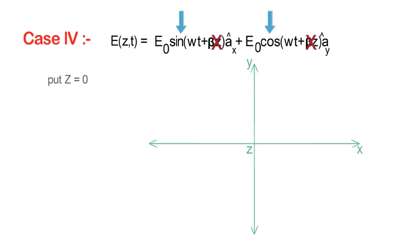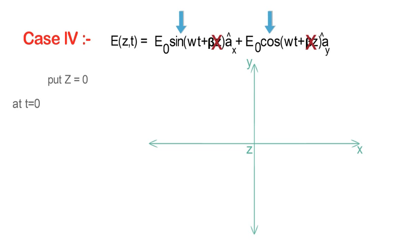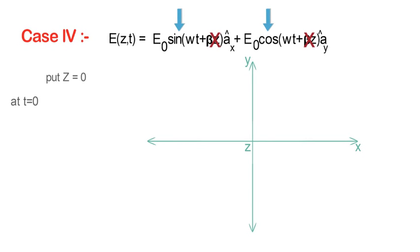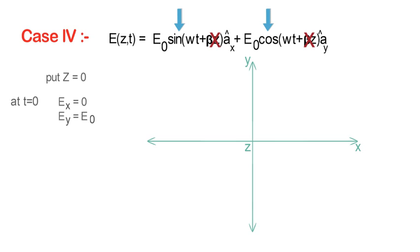So let's start with t = 0. At t = 0, sine term will become 0 and the cosine term will have maximum value. So here Ex = 0 and Ey = E0.